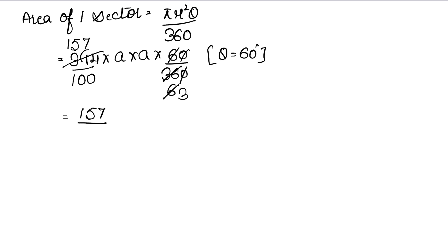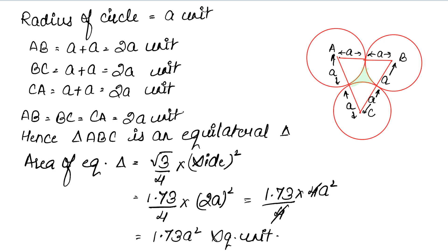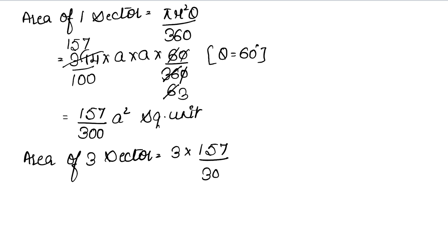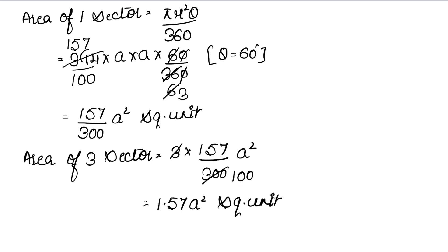Now area of three sectors: since there are three sectors, we multiply the area of one sector by three. So area of three sectors = 3 × 157/300 * a² = 471/300 * a² = 1.57 A² square units.